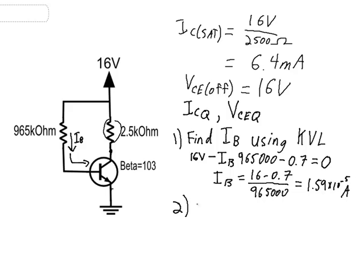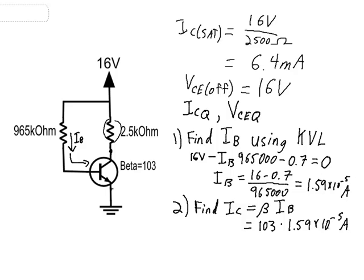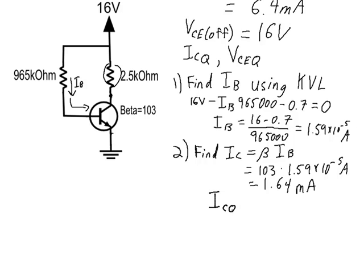Step two is to find IC. The collector current is simply beta times IB. For this example, with a beta of 103 times 1.59 times 10 to the minus 5 amps, that gives us a collector current of 1.64 milliamps. So ICQ equals 1.64 milliamps.